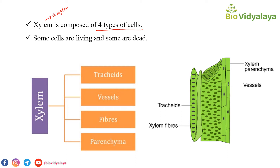As I mentioned, xylem is a complex tissue composed of four types of cells. Some cells are living, meaning with protoplast, and some are dead, meaning without protoplast. The four types of cells present in xylem are: tracheids, vessels, xylem fibers, and xylem parenchyma. In the picture you can see tracheids, vessels, xylem fibers found in between them, and xylem parenchyma.